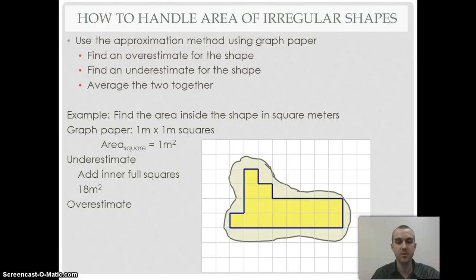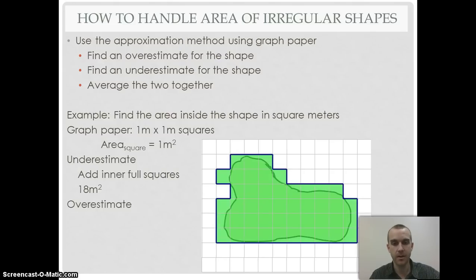For my overestimate, I'm going to cover everything. Anything that has a partial touch from a block, I'll count as well as the full blocks. It just barely comes in here, but I'll count that entire block. When I add all those squares, I get 46 squares, so that's 46 square meters for my overestimate.